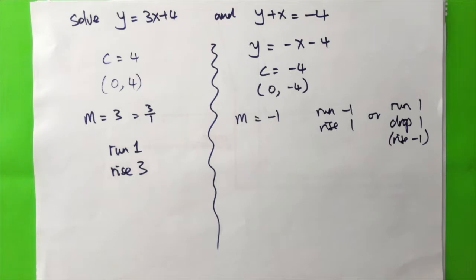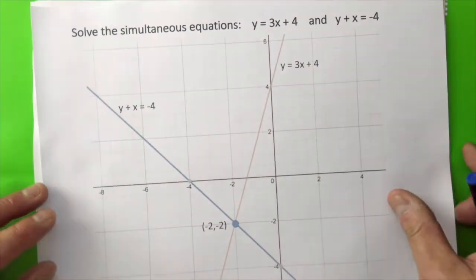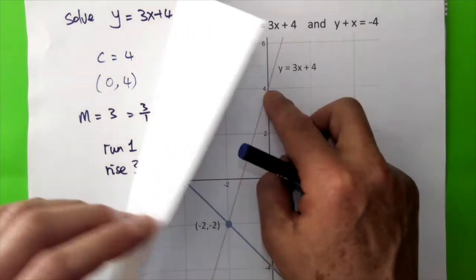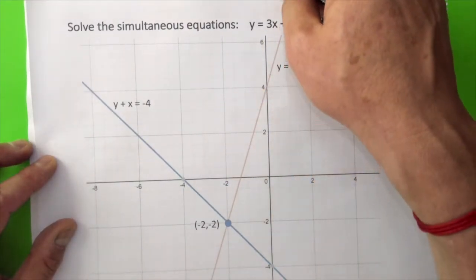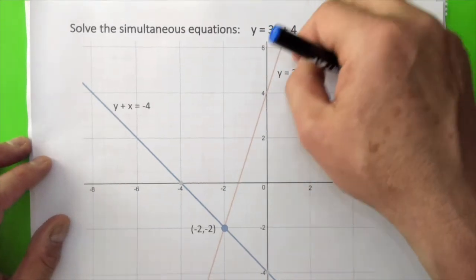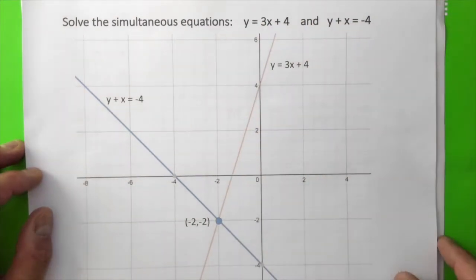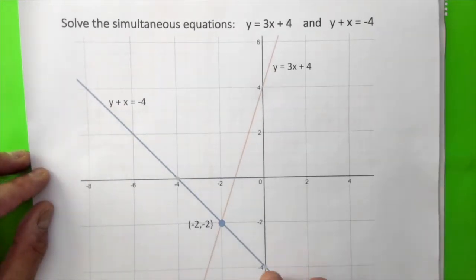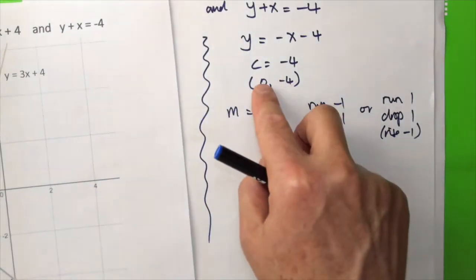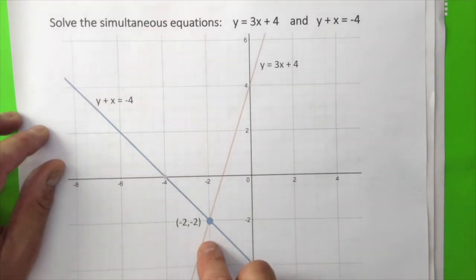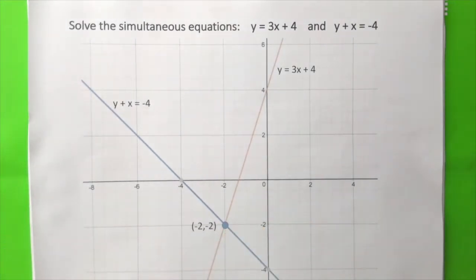Using this information, for y equals 3x plus 4, we know it crosses the y-axis at (0, 4), with a run of 1 and rise of 3. For y plus x equals minus 4, we start from (0, minus 4) with a run of minus 1 and rise of 1, repeating to plot the line. Therefore, the solution where the two lines meet is (minus 2, minus 2).